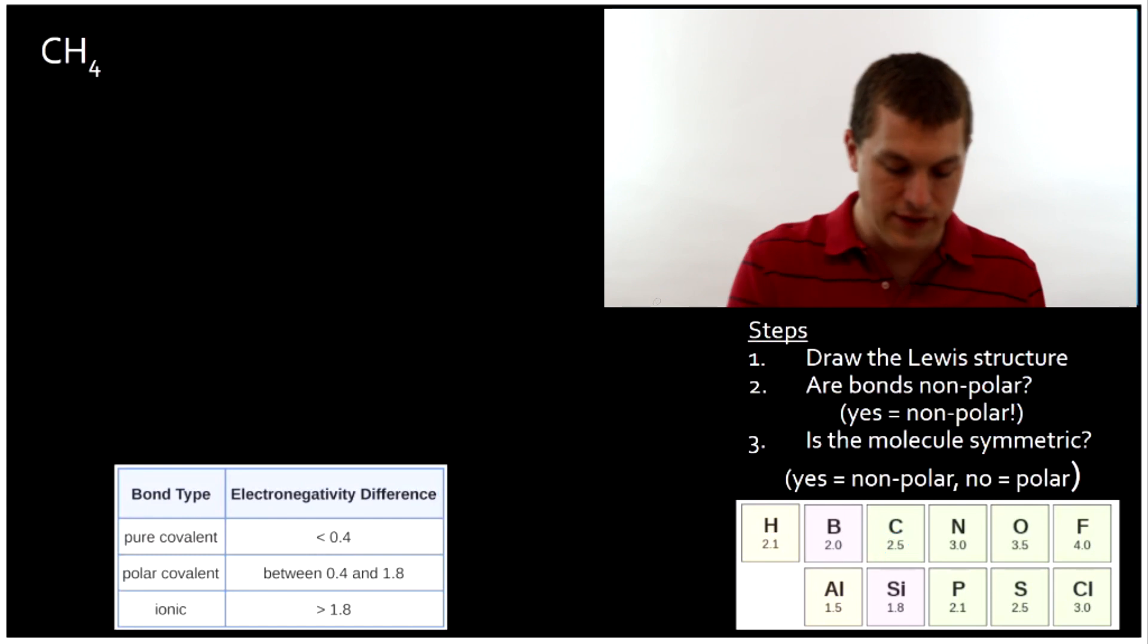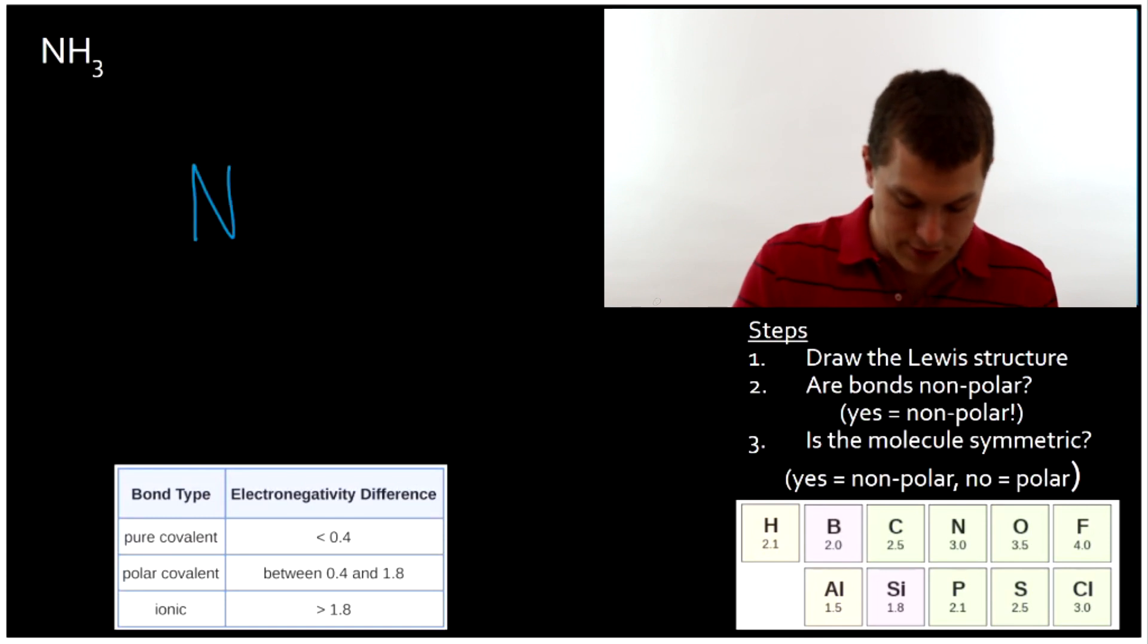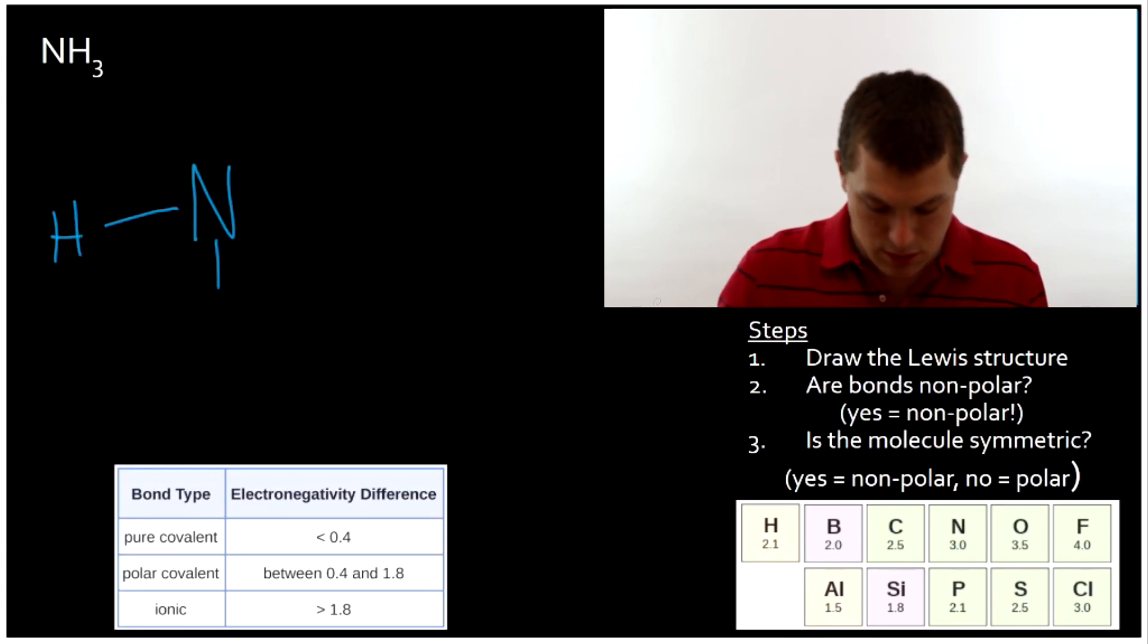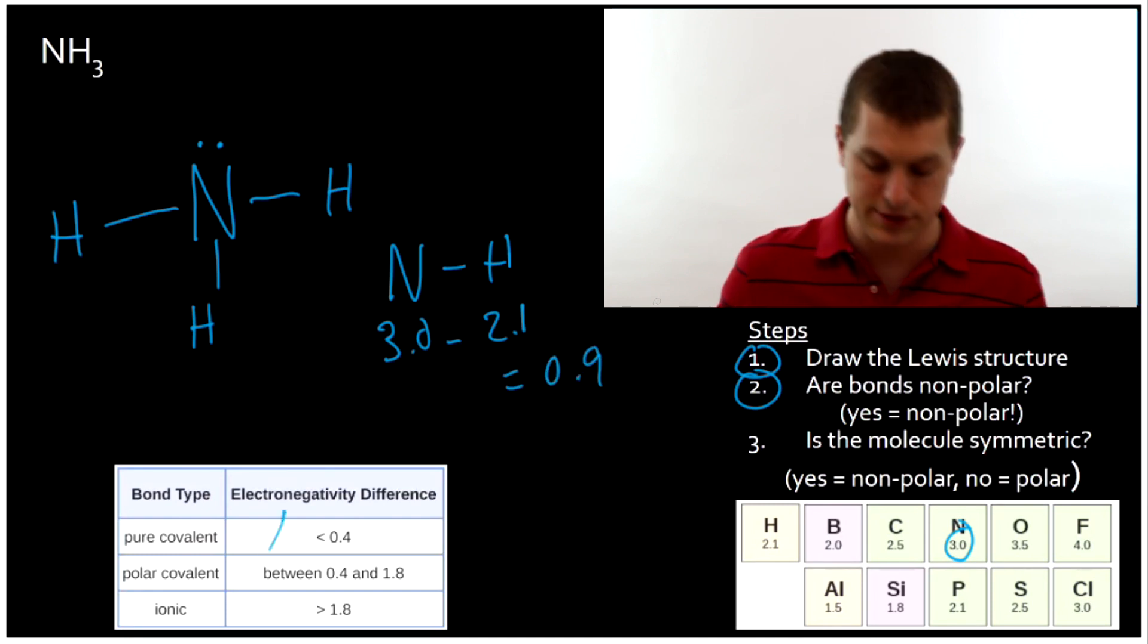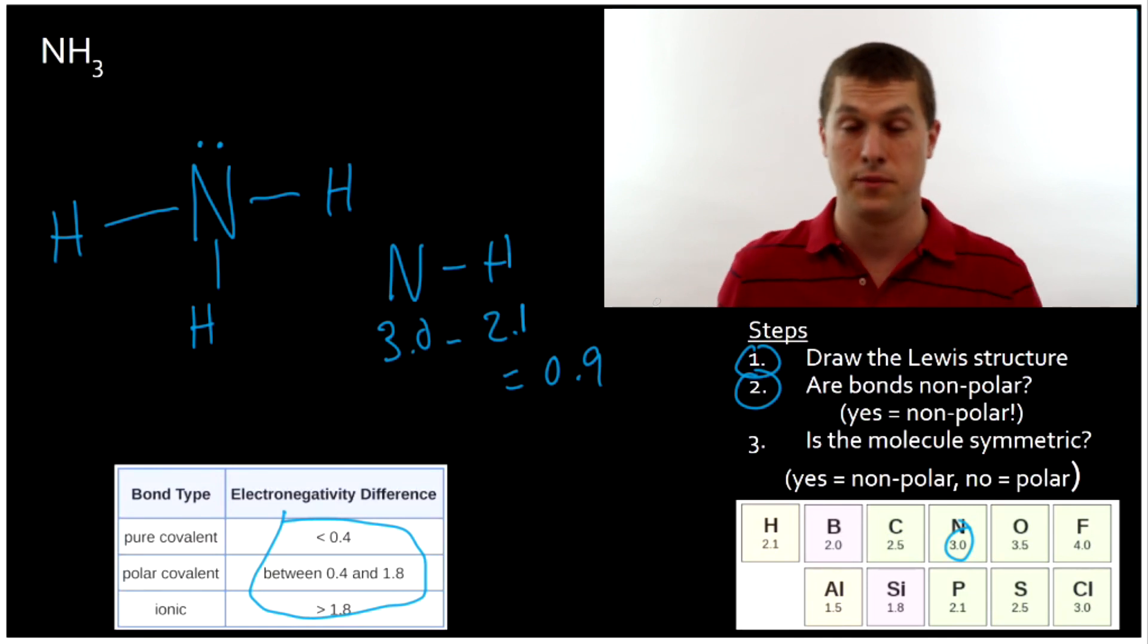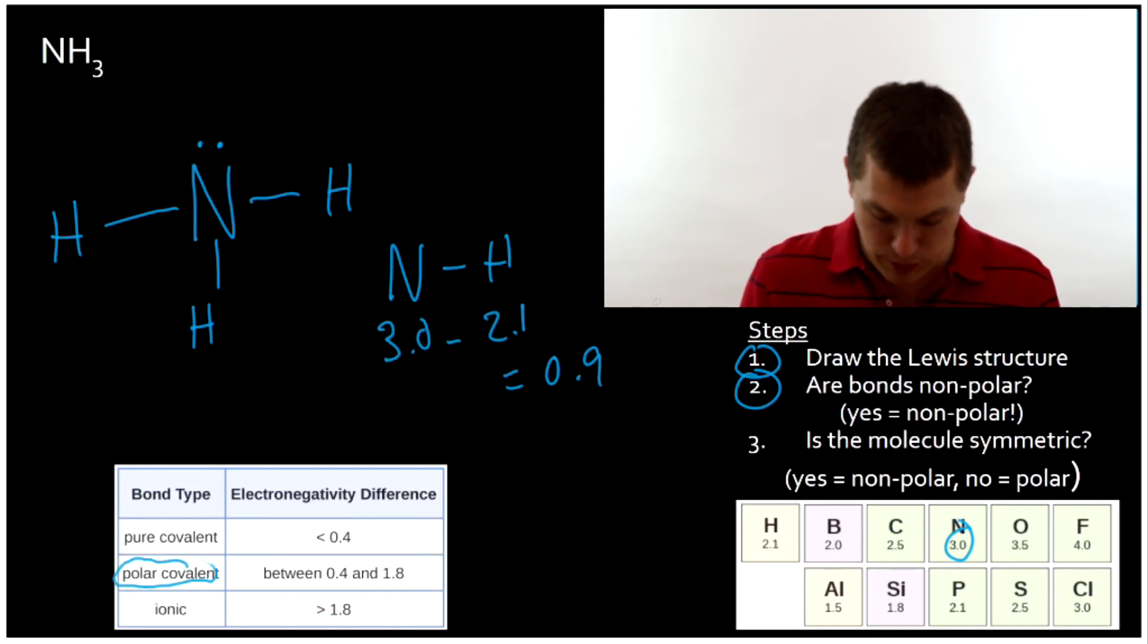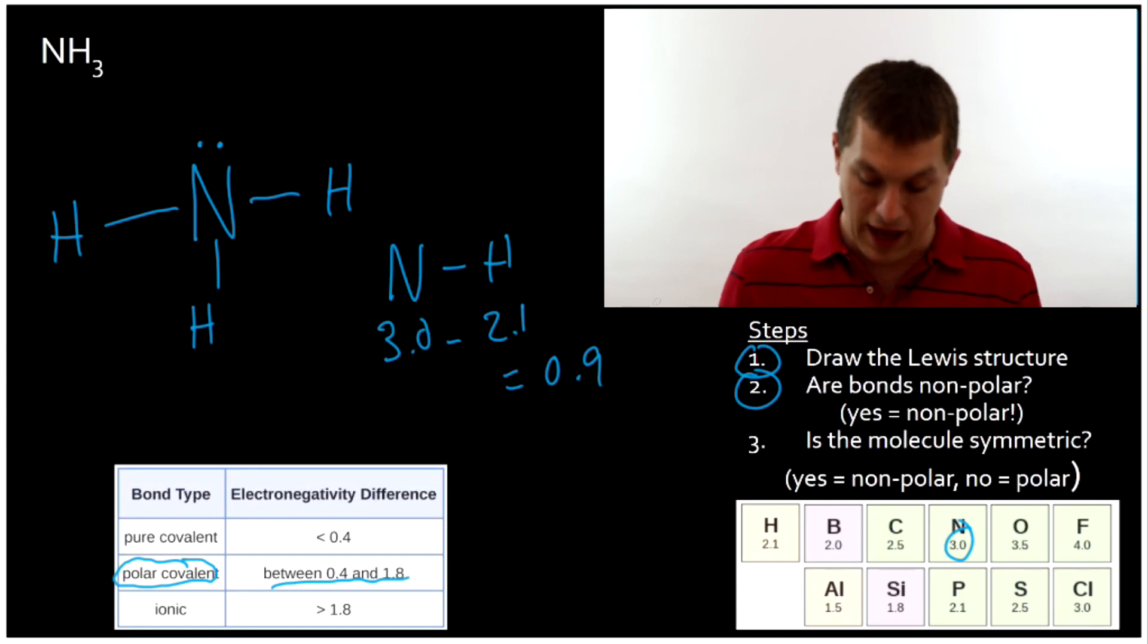Let's look at another example. Here we have NH3, which is ammonia. Again, we'll start with drawing the Lewis structure. We're going to need three hydrogens and a lone pair on nitrogen. And now we're going to decide, after we've drawn the Lewis structure, are the bonds polar? So I'm going to do nitrogen minus hydrogen. Nitrogen has an electronegativity of 3.0 minus my 2.1 for hydrogen. That gives me 0.9. It doesn't actually matter whether I subtract hydrogen from nitrogen or nitrogen from hydrogen. It's all about the magnitude of that value. So it's 0.9, which puts it plainly in the polar covalent range. It's between 0.4 and 1.8. So that means I have polar bonds.